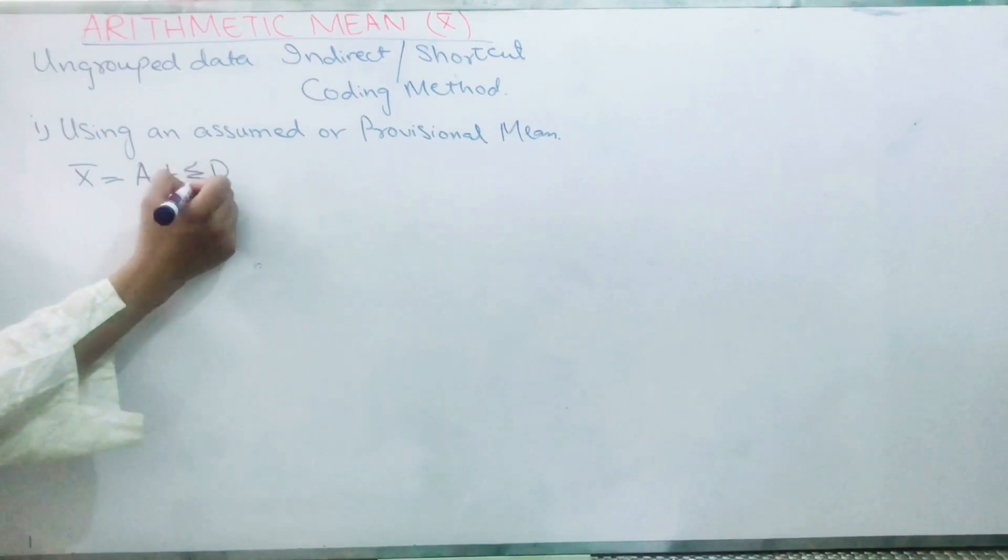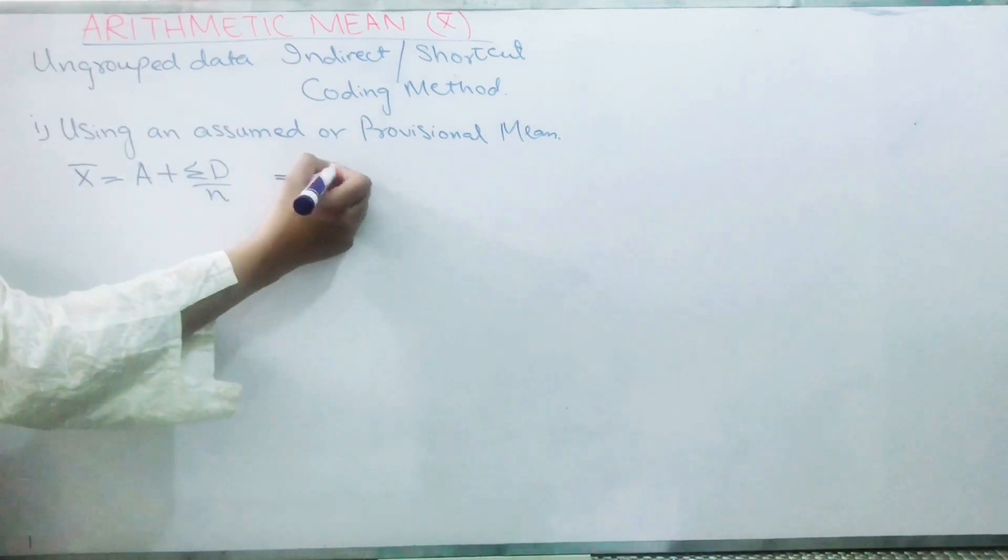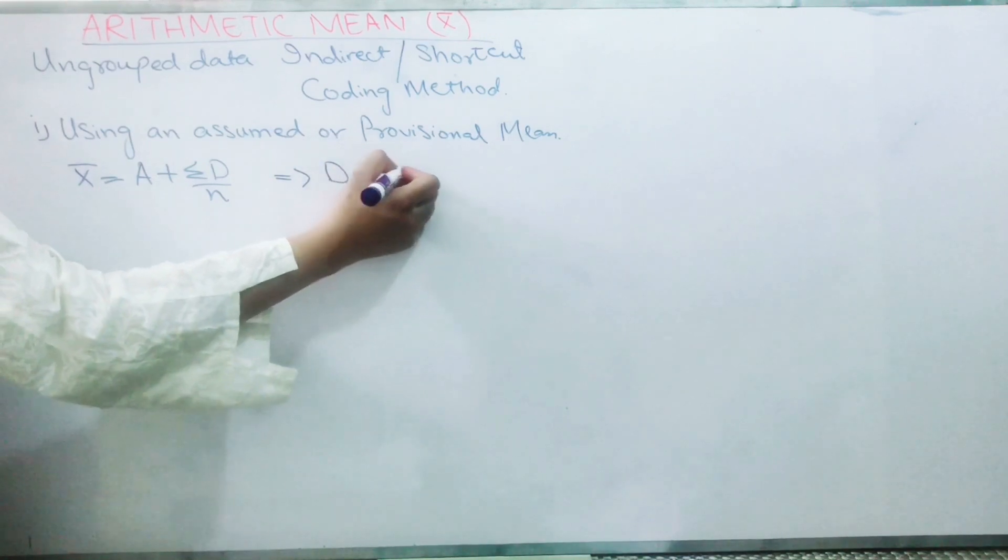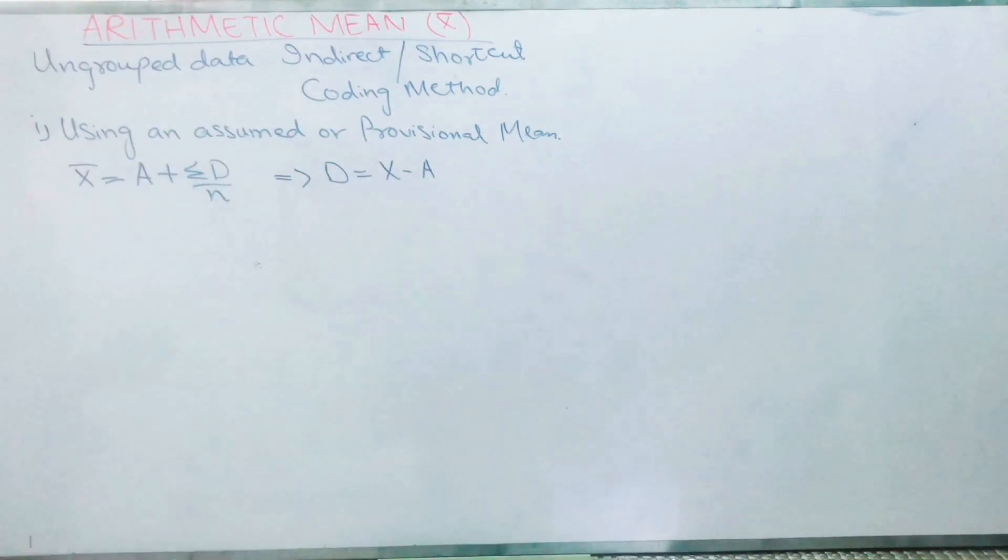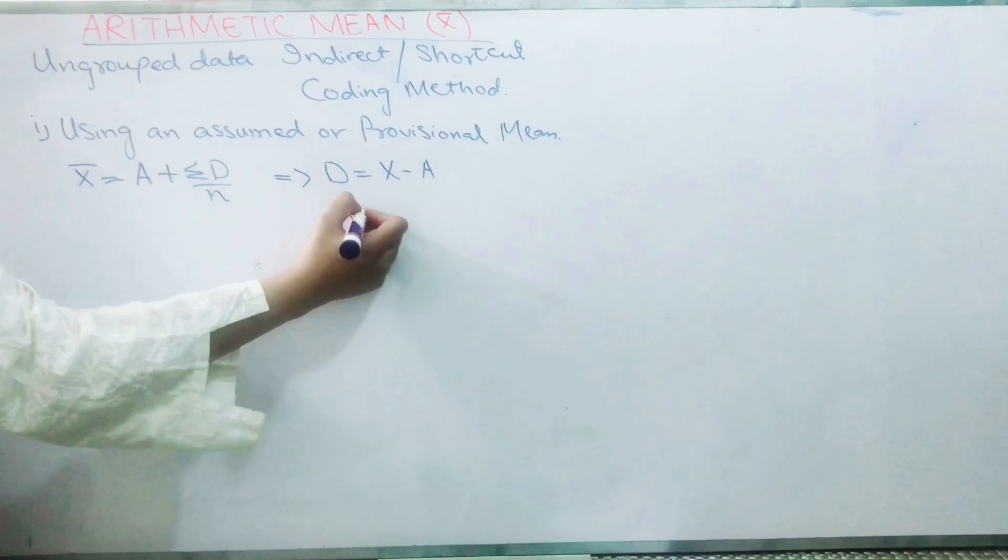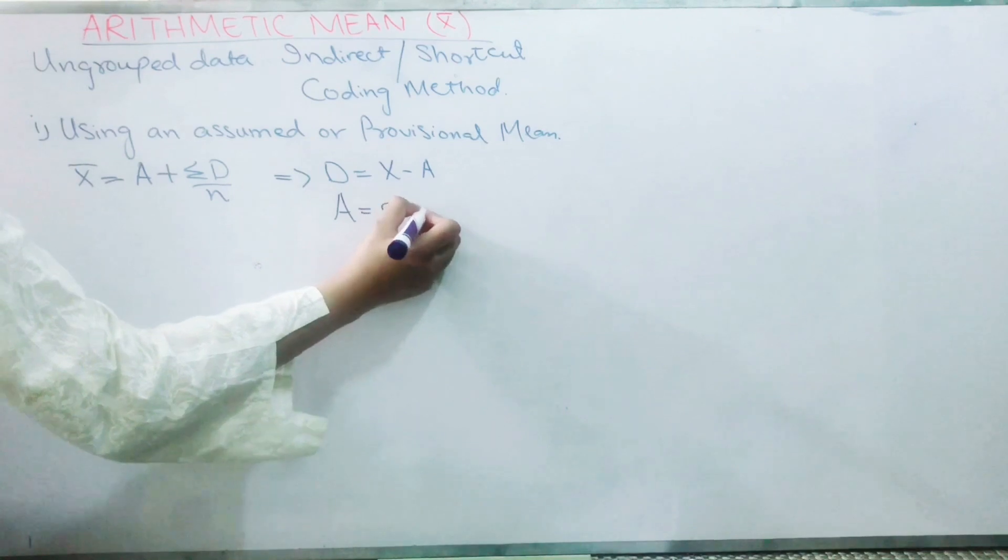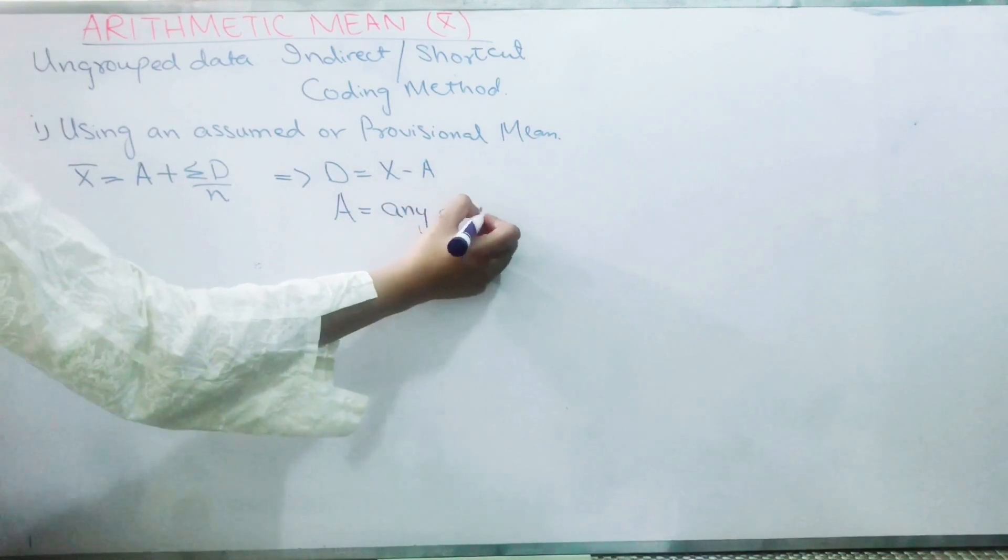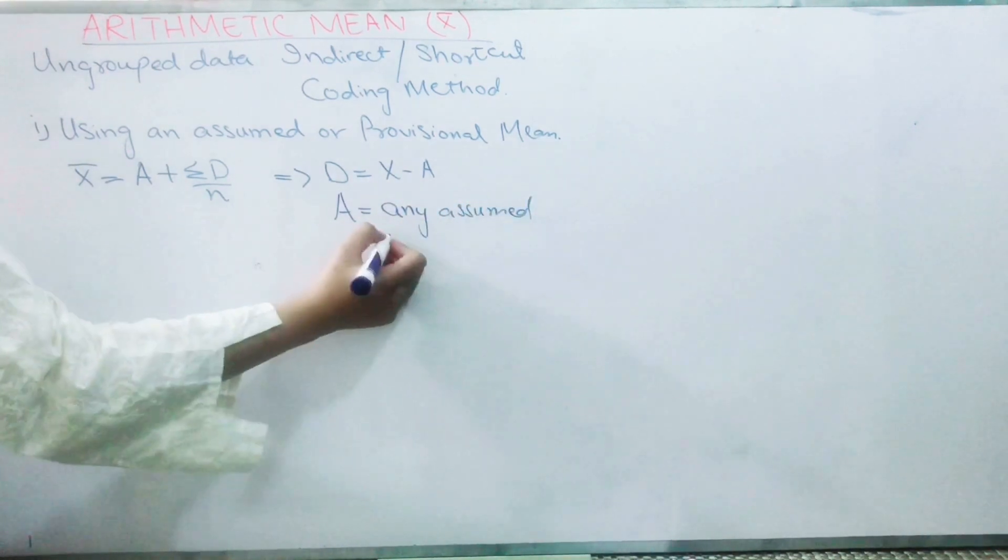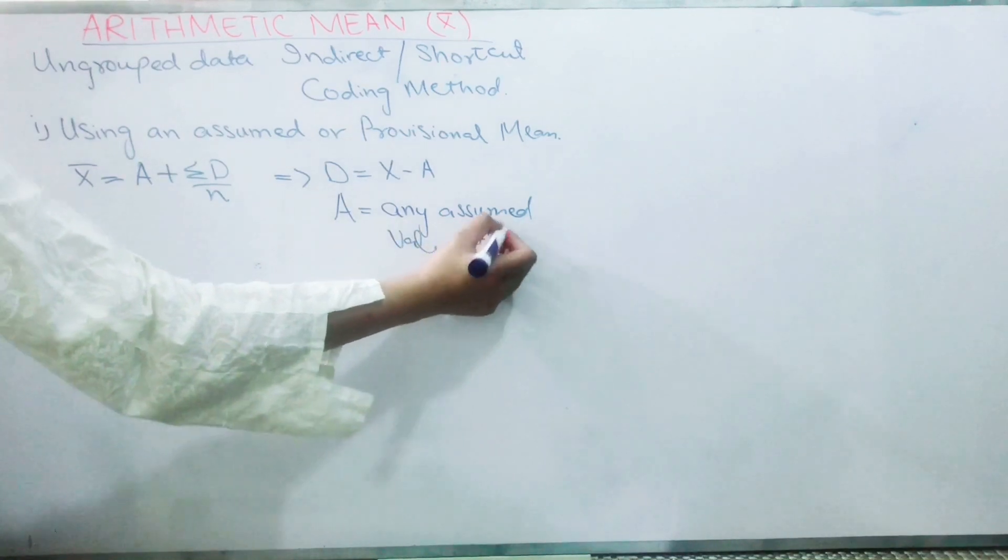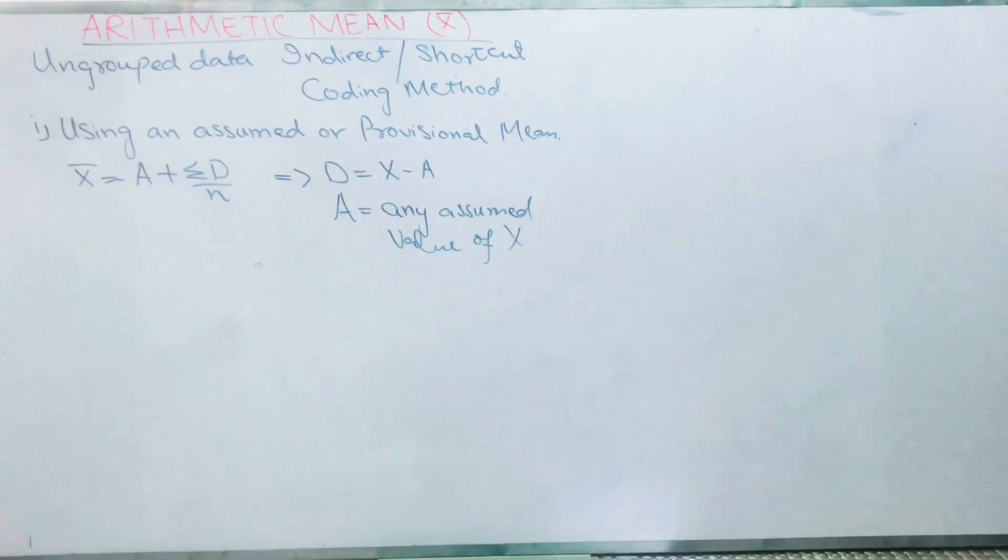We will use the formula: x̄ = A + ΣD/n. Now what is D? D = x - A, which means you have to subtract A from each value of x. And what is A? A is any assumed value of x.